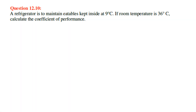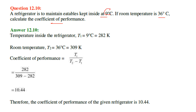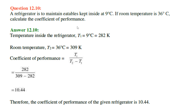A refrigerator maintains eatables at 9 degree centigrade while the room temperature is 36 degree centigrade. Converting to Kelvin: T1 equals 282 K and T2 equals 309 K. The coefficient of performance equals T1 divided by (T2 minus T1). Substituting the values gives a coefficient of performance of 10.44. These are the questions and answers on thermodynamics. Thank you and take care.